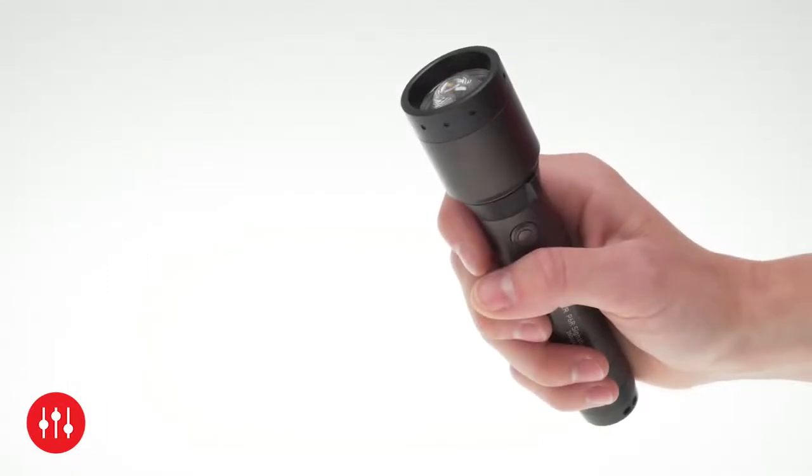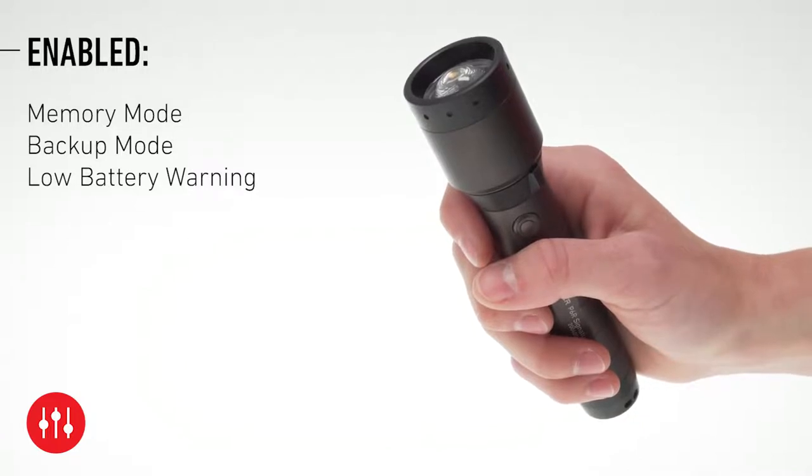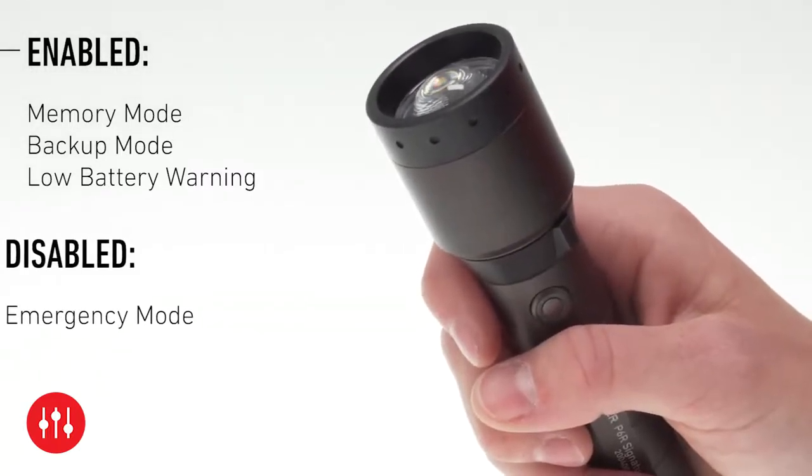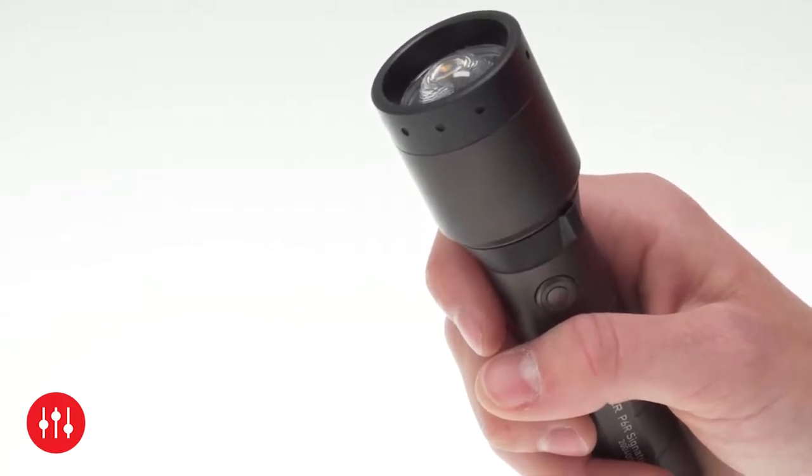By factory default, memory mode, backup mode, and low battery warning are enabled, and emergency mode is disabled. When these general features are activated, they will work across all light functions.